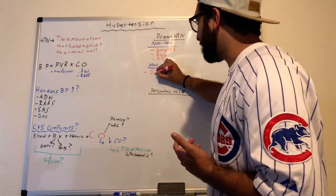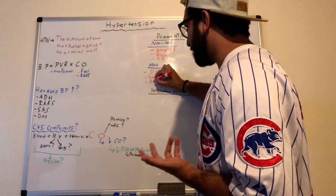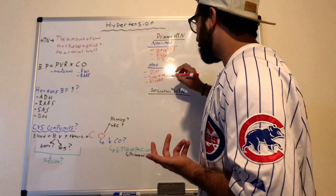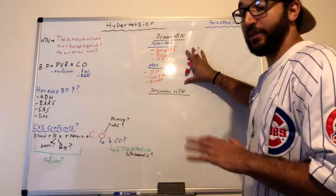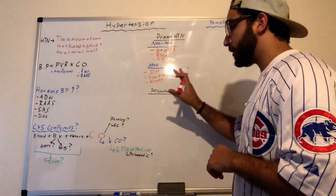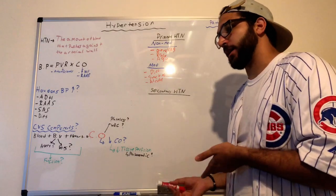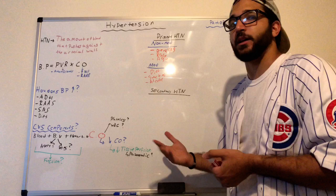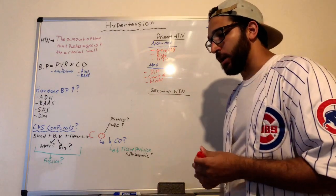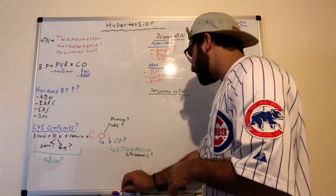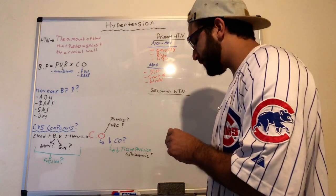Modifiable factors for primary hypertension include diet, smoking, and drinking alcohol. Secondary hypertension, on the other hand, is caused by an underlying disorder — it's secondary to a disease process. One example is renal disease.